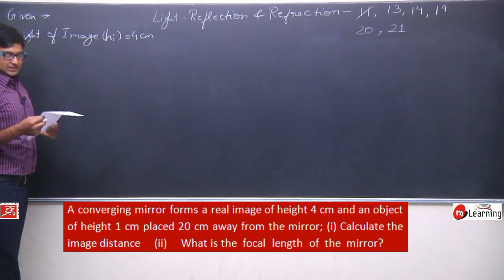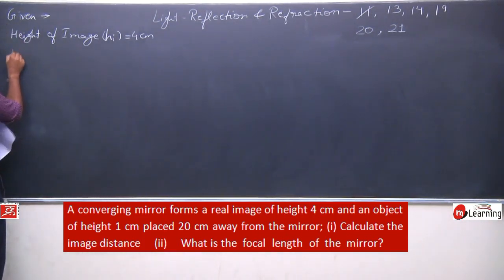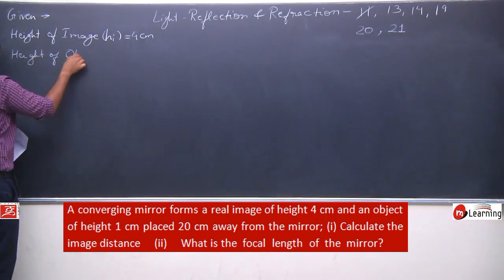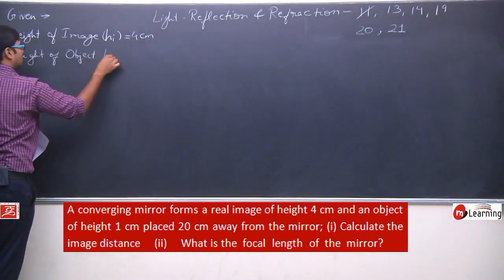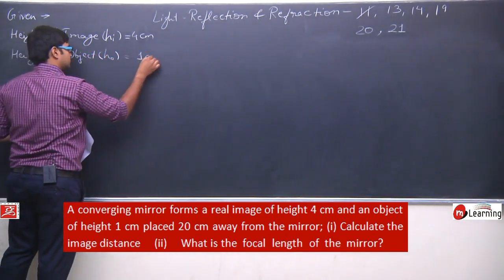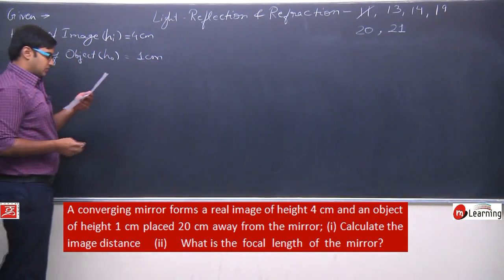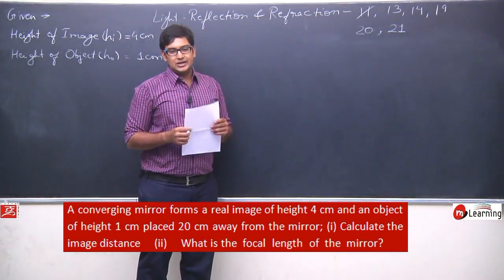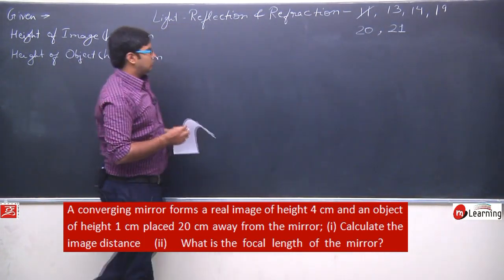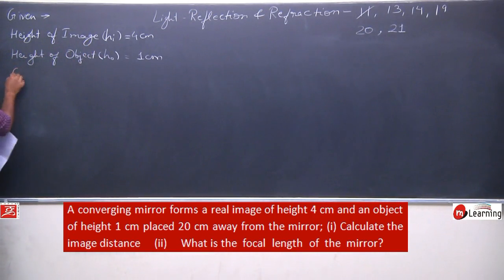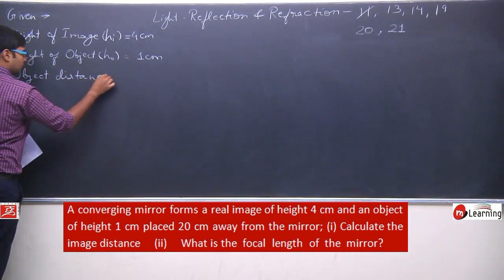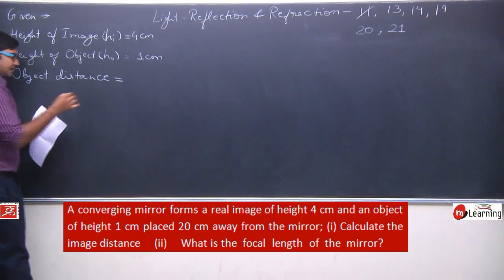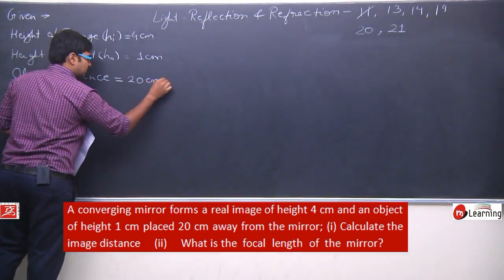Height of object, h_o, is 1 centimeter. And the object is placed 20 centimeters away from the mirror. So object distance is given as 20 centimeters.